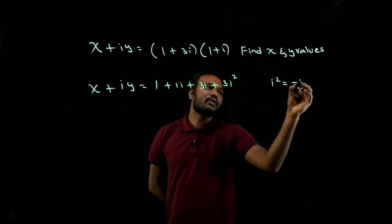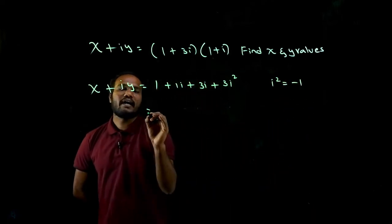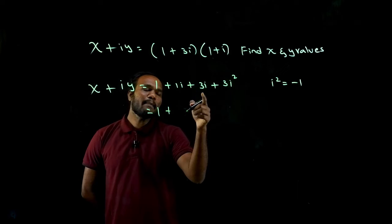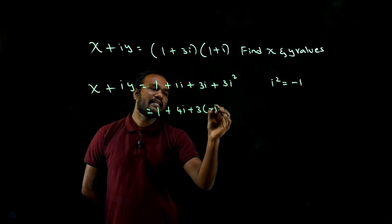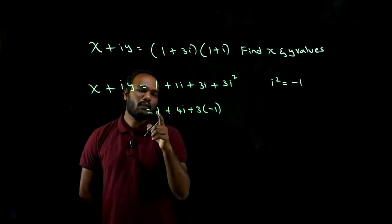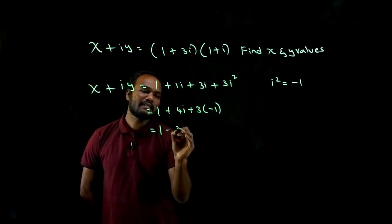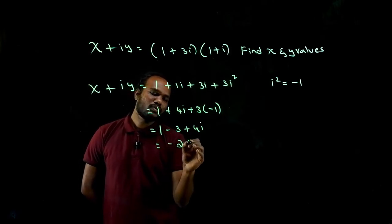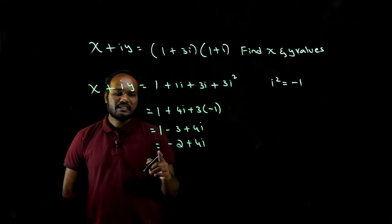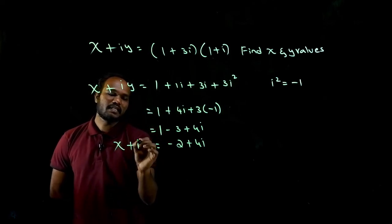What is the value of i square? i square value is minus one. So I have one plus one i plus three i, four i, plus three times i square. Value is minus one, so one minus three plus four i. One minus three is minus two plus four i. This is the value of x plus iy.